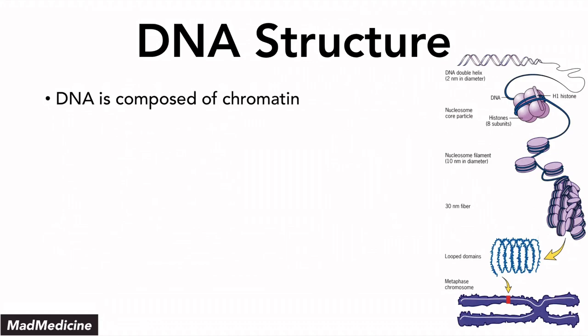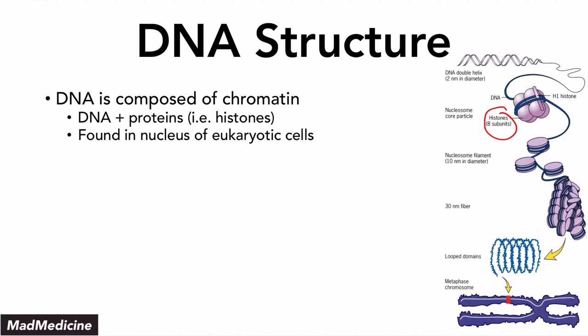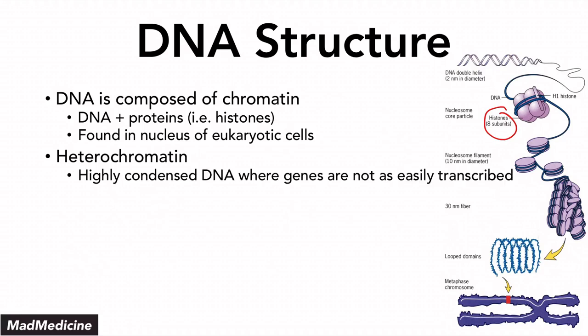The DNA structure is composed of chromatin. Chromatin is essentially DNA plus protein — especially histone proteins, which function to bind DNA together — and it's found in the nucleus of eukaryotic cells. You can have heterochromatin, which is highly condensed DNA. Because it's tightly wound, there's no space for other proteins to come in, unwind the DNA, and read it, resulting in a low frequency of transcription.